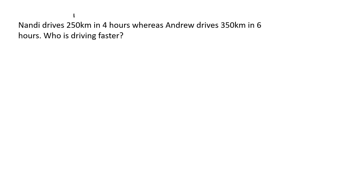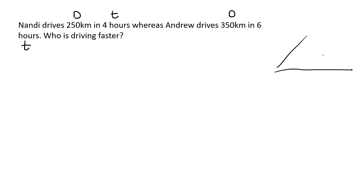Next question. Nandi drives 250 kilometers — that's a distance — in four hours — that's a time. Whereas Andrew drives 350 kilometers in six hours. Who is driving faster? So we've got distance, speed, and time. We need to calculate speed for each person.